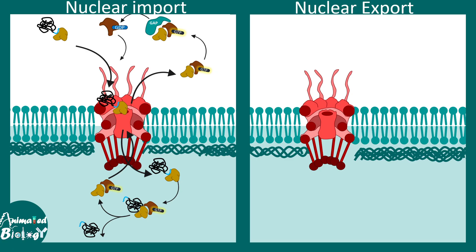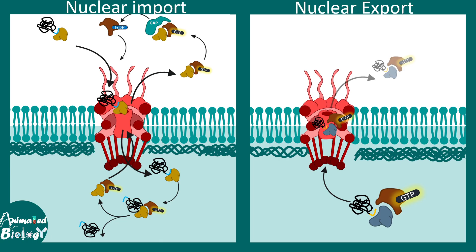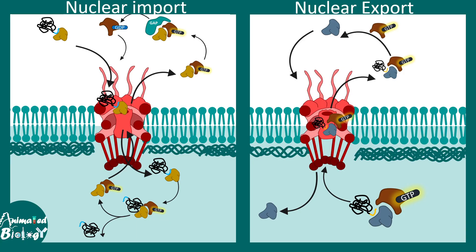Now let's talk about export. Just like there are import signals, there are also export signals. These export signals bind to exportin molecules, and RAN-GTP also binds. The RAN-GTP-bound exportin complex is transported out of the nucleus to the cytoplasm through the nuclear pore complex. In the cytoplasm, RAN-GTP is dissociated, the exportin complex is freed, and it is then brought back inside the nucleus for a new round of export.